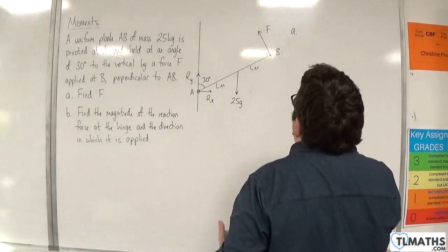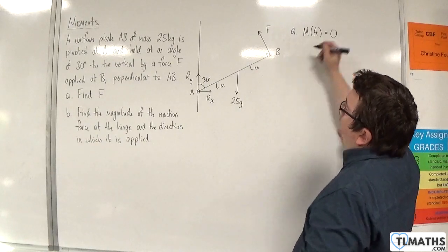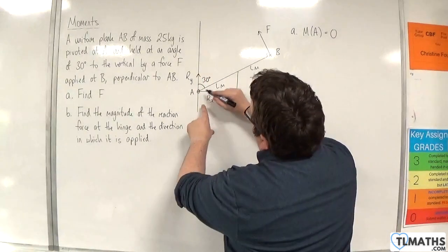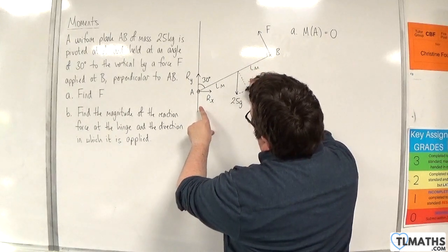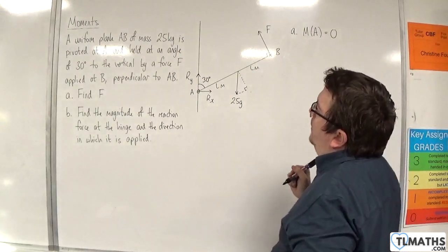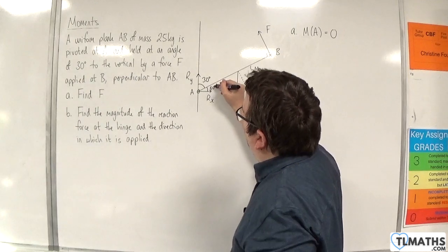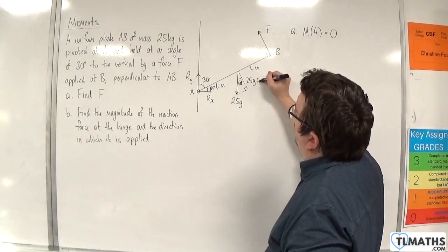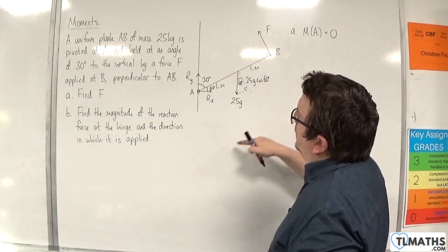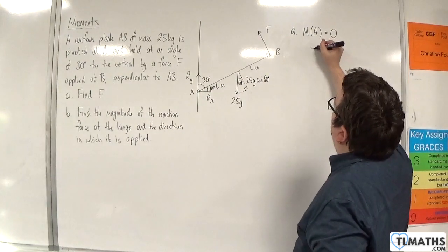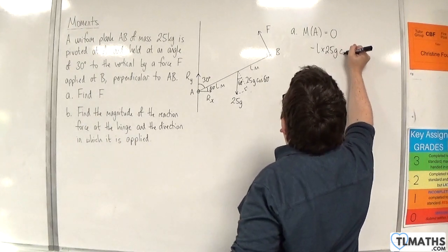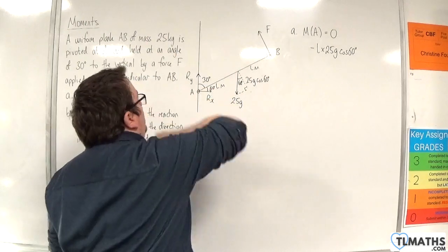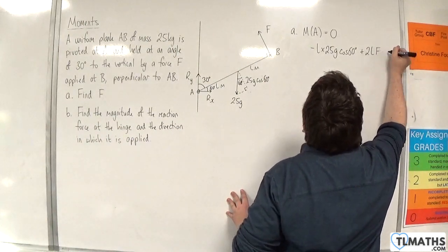We fall back on taking moments, and I'm going to take moments about point A. That allows me to ignore R_X and R_Y. We are L meters away, so I'm going to split the weight up into its components. This angle being 30 means that that angle is 60 degrees. So this side will be 25G cosine 60. We're L meters away and it's going around in a clockwise motion. So take away L times 25G cosine 60.